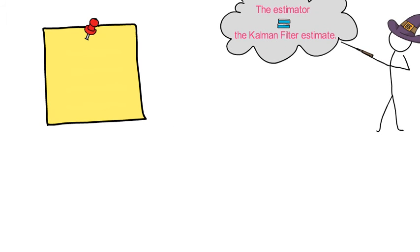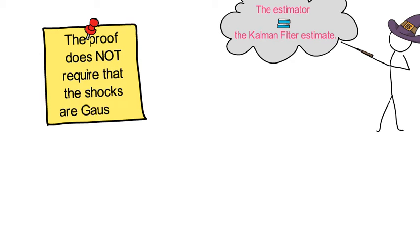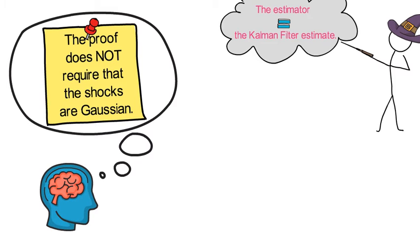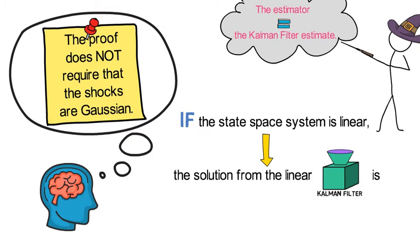Interestingly, the proof does not require that the shocks are Gaussian. Make sure you keep a mental note for that. This says that as long as the state-space system is linear with IID shocks, the solution from the linear Kalman filter is MVLUE. That sounds like a song.